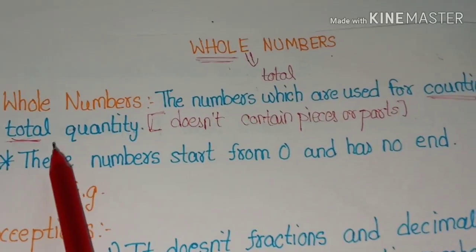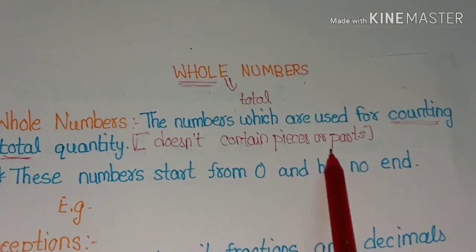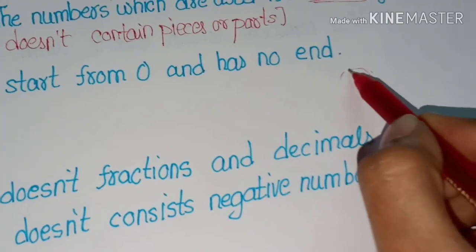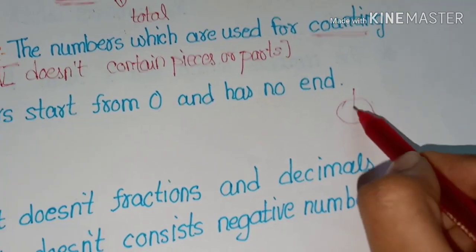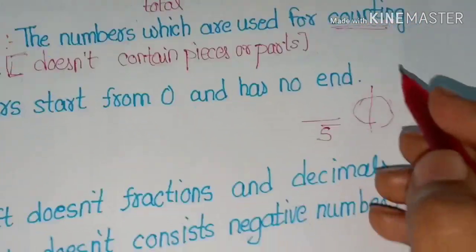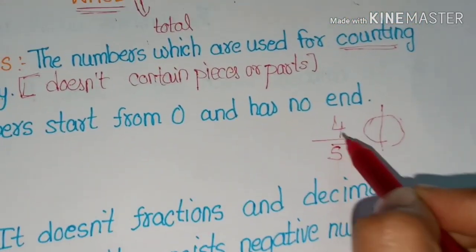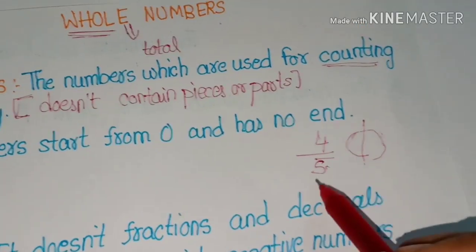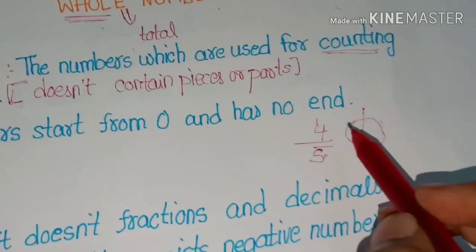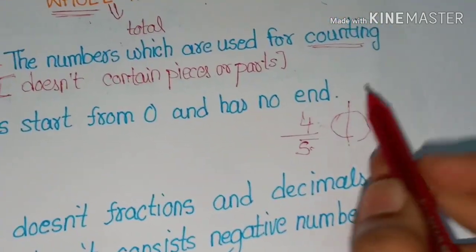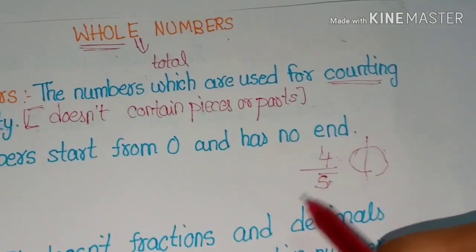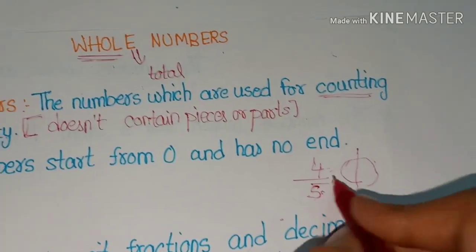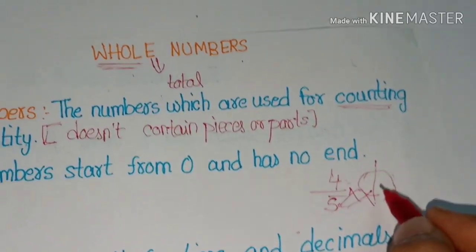Whole numbers are used for counting total quantity and they don't contain pieces or parts. For example, if you have one pizza or apple and it is cut into 5 pieces and one piece is eaten, the remaining 4 pieces out of 5 represents a fraction — it shows parts, not the whole quantity. So this is not a whole number. Whole numbers must represent the total quantity.